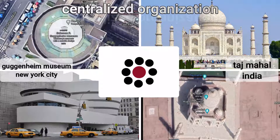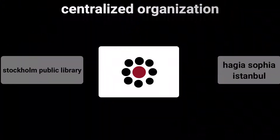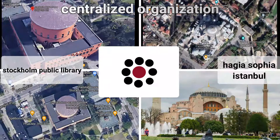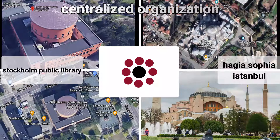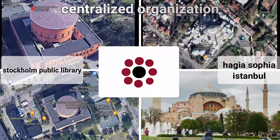The central space always has an important function or a symbolic meaning because it holds an important and powerful place. The secondary spaces might or might not be similar in form. If similar, it may be because they have the same function or equal importance, and this will result in a form that's symmetrical and geometrically regular.